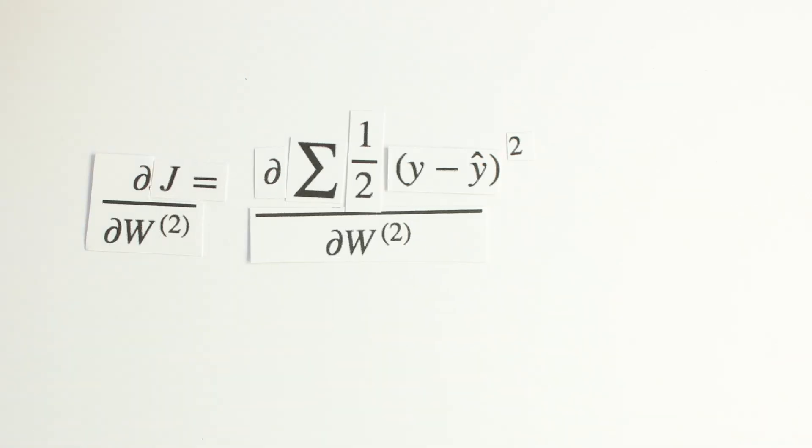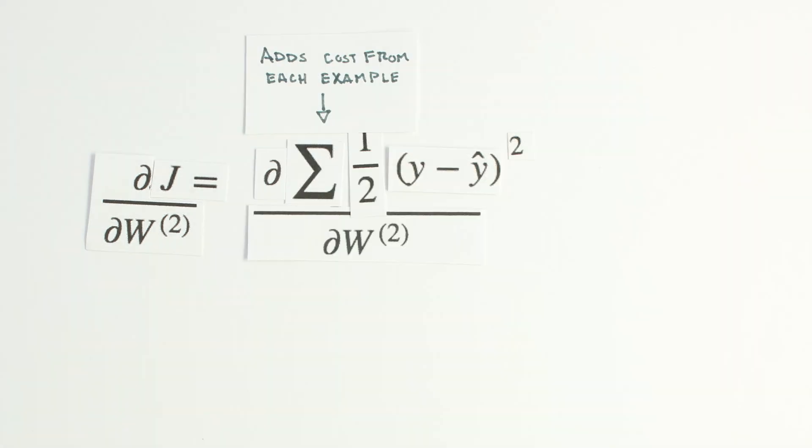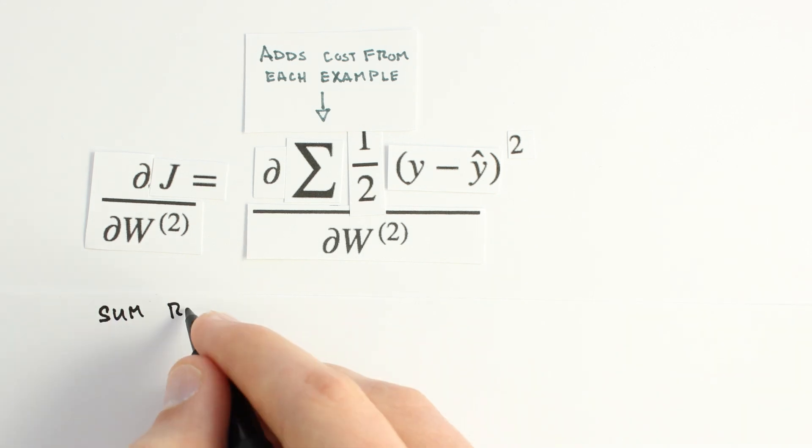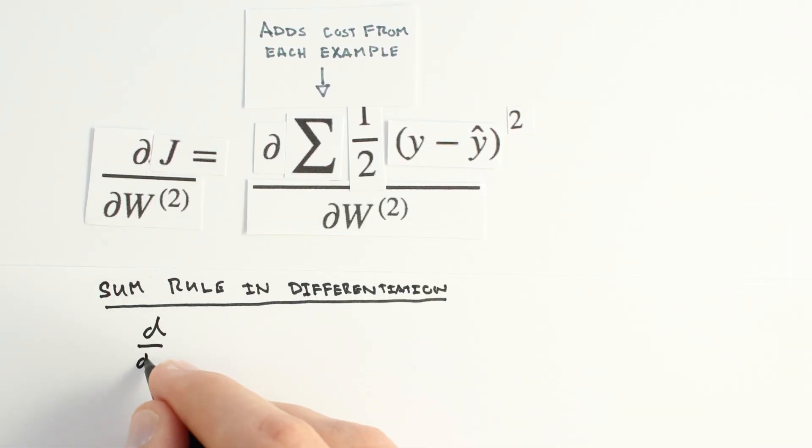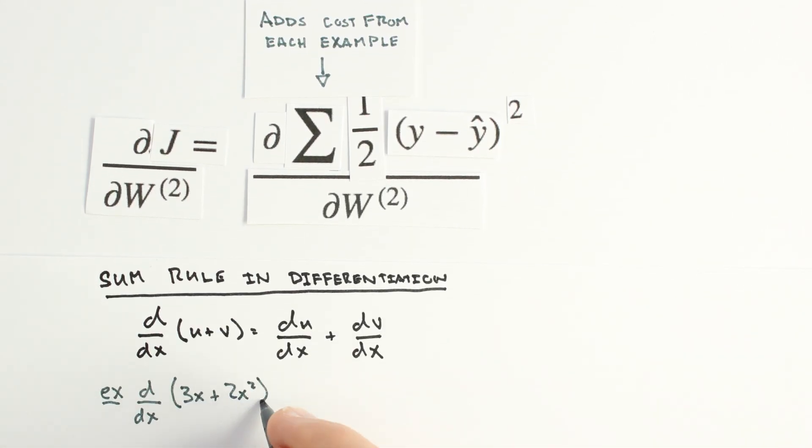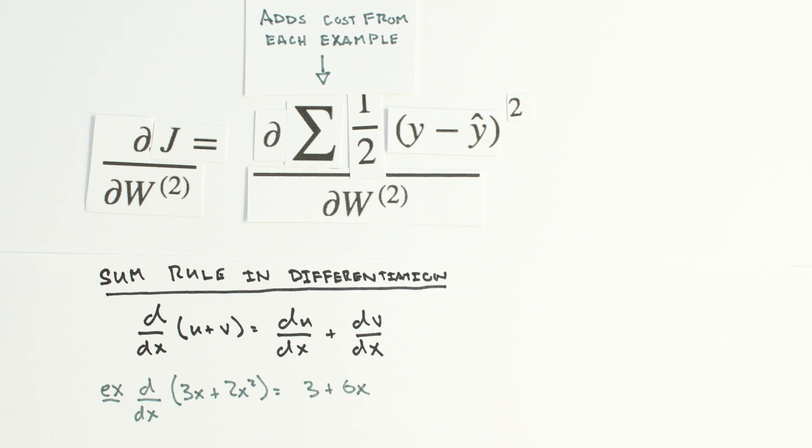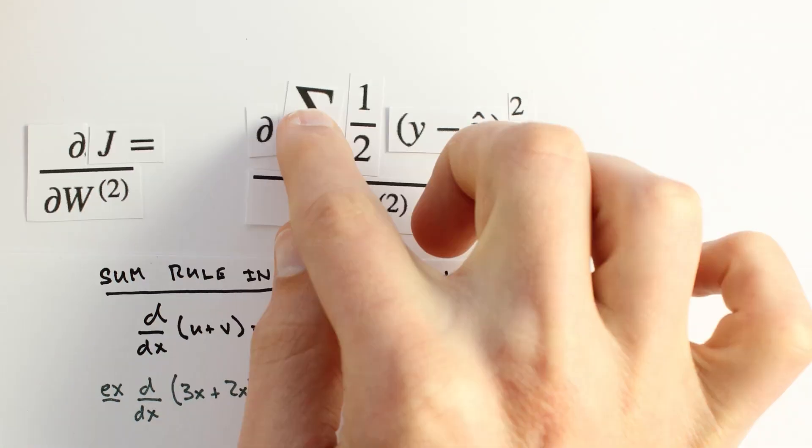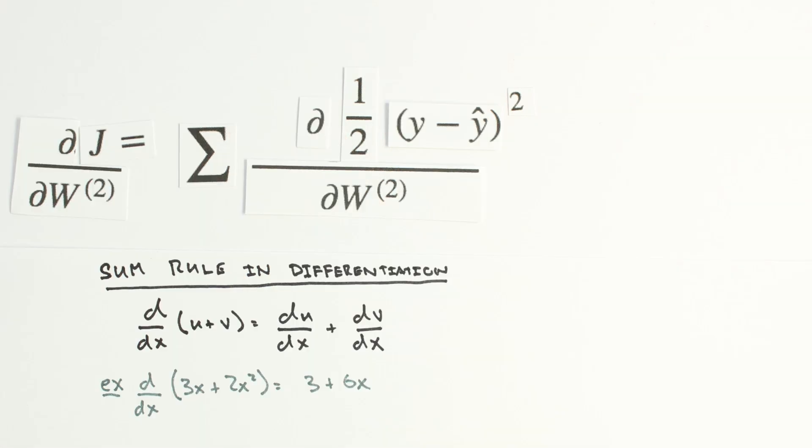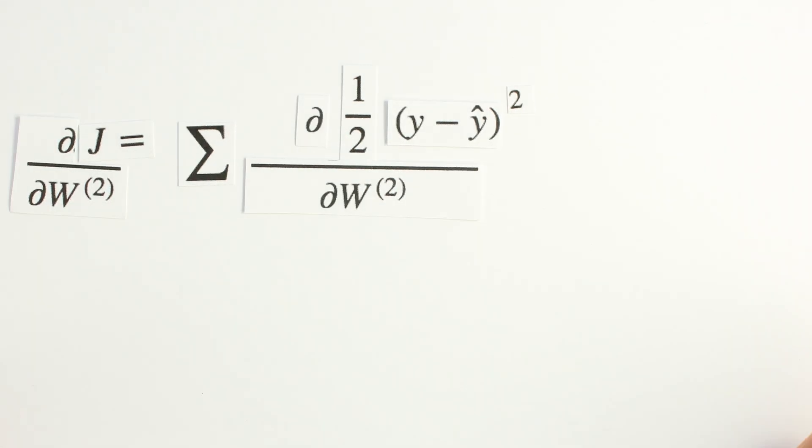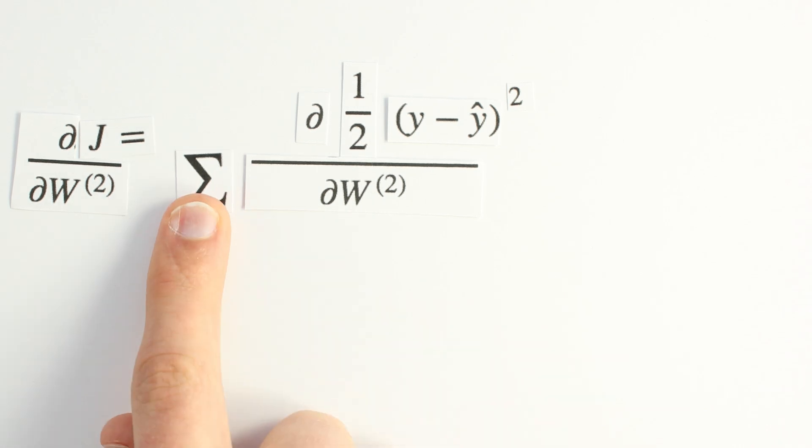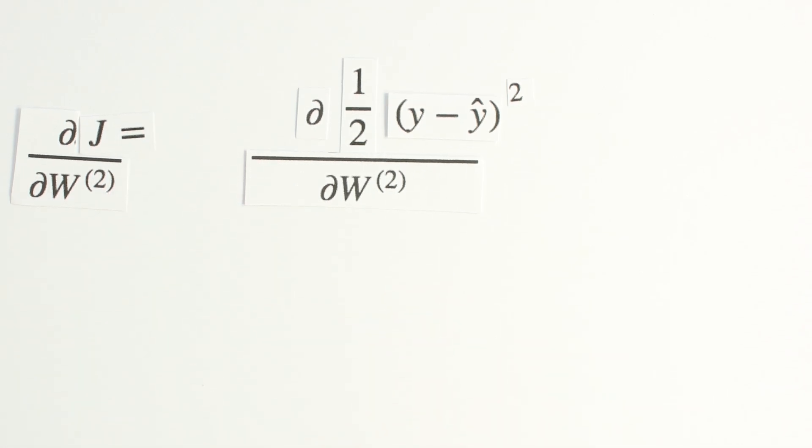The sum in our cost function adds the error from each example to create an overall cost. We'll take advantage of the sum rule in differentiation, which says that the derivative of the sums equals the sum of the derivatives. We can move our sigma outside and just worry about the derivative of the inside expression first. To keep things simple, we'll temporarily forget about our summation. Once we've computed djdw for a single example, we'll go back and add all our individual derivative terms together.